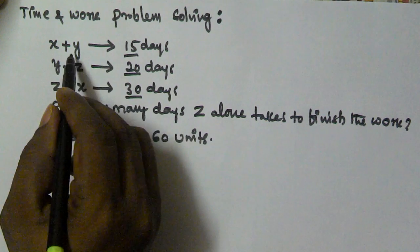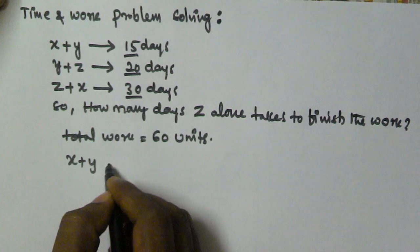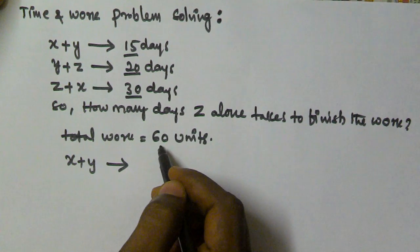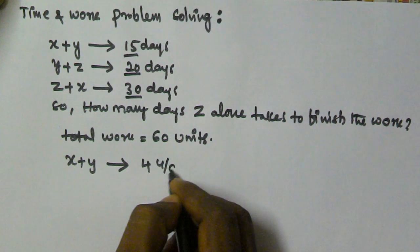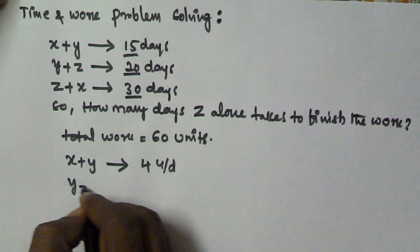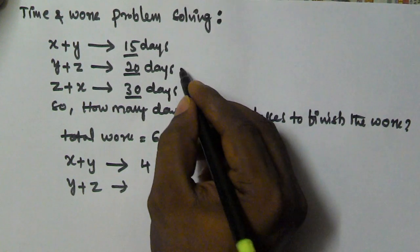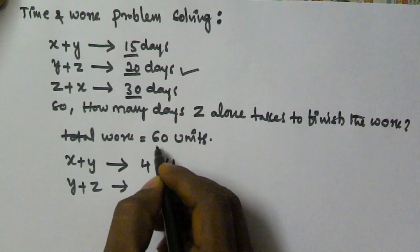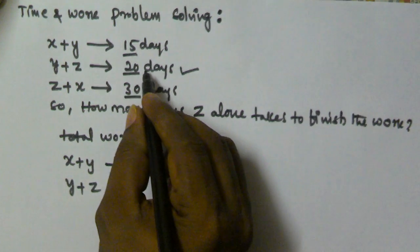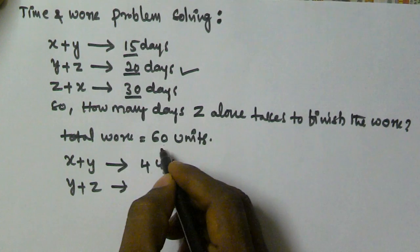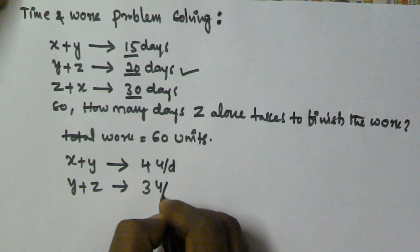X and Y together take 15 days, so that means X and Y are going to finish 60 divided by 15, that means 4 units per day. And Y and Z together finish the work in 20 days, and the work is 60 units, so that means they are going to finish 3 units per day.